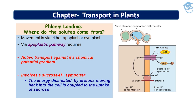The energy dissipated by protons (H+) moving back into the cell is coupled to the uptake of sugar. The symplast pathway is where water moves between the cytoplasm of adjacent cells. However, the apoplast pathway can only take water a certain way near the xylem, where the Casparian strip forms an impenetrable barrier to water in the cell wall, and water must move into the cytoplasm to continue.